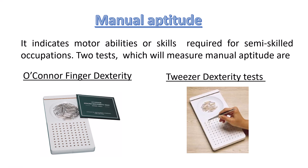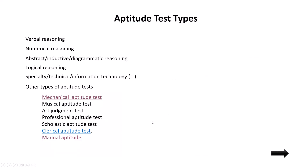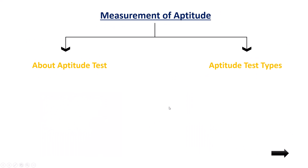Both tests are relatively similar — the only difference is using fingers versus an instrument to place the pin. This is the manual aptitude test, showing your capacity to work manually and physically. So we have seen two main things: what is aptitude, and the different types of aptitude tests.